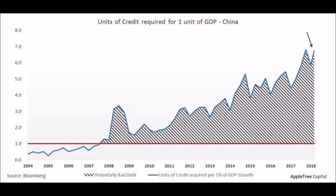This goes back to Ludwig von Mises, who said that once you go to fiat currency and you start doing an enormous amount of credit, you will eventually have a currency crisis.